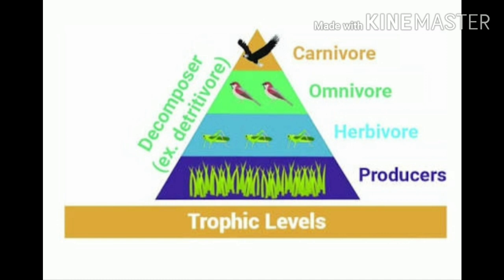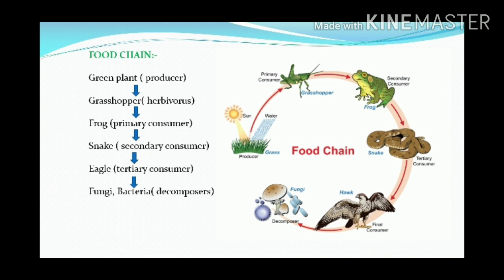An energy pyramid is the diagrammatic representation that depicts the energy level at the various trophic levels. Energy transfers in the form of interactions through all food chains and food webs. The energy pyramid shows how energy travels up a food chain.